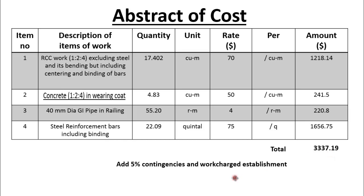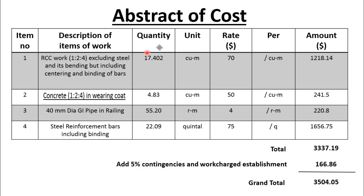Now add 5% contingencies and work charge establishment. 5% of 3,337.19 is 166.86 dollars. The grand total or total cost of the bridge will be 3,504.05 dollars. We have calculated all the quantities of items of work and the total cost of the bridge. It was all for today. Thank you very much for watching the video. For more updated videos about quantity surveying and civil engineering, please keep in touch. If you have not subscribed the channel yet, please subscribe and click the bell icon to receive notifications. Do not forget to like this video. Thank you very much.